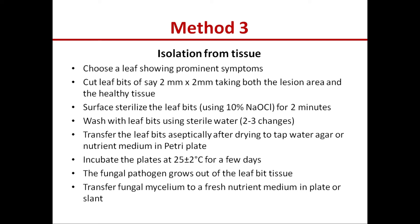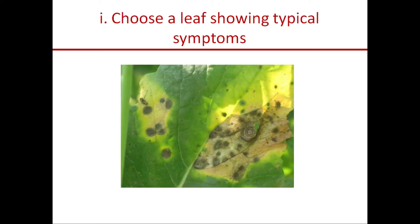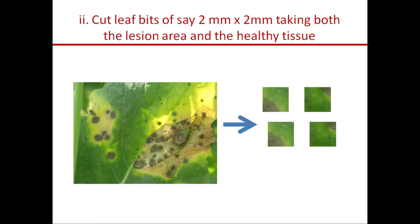The procedure step by step: choose a leaf showing typical symptoms — say an Alternaria blight-affected mustard leaf. Cut leaf bits from the margins or edges of the lesion so that the bits contain some area of the lesion and some area of healthy tissue. This edge of the lesion is important because the pathogen is advancing radially from the lesion to all other sites, and the most active growth of the pathogen will be found in this marginal area. We should not take leaf bits with only the lesion or only the healthy part of the leaf.